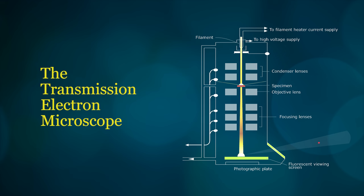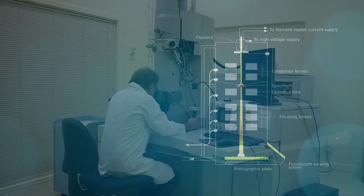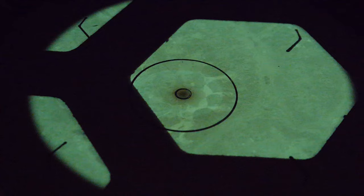Electrons pass through the specimen and are focused onto a fluorescent screen by using electromagnetic lenses. When electrons impinge on the screen, secondary light rays are emitted and form an image. The resulting image is seen through a window at the bottom of the column.